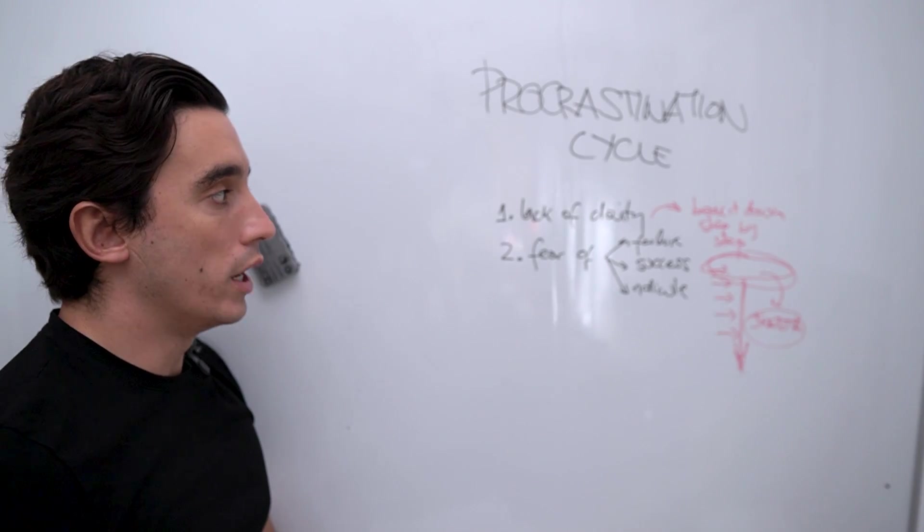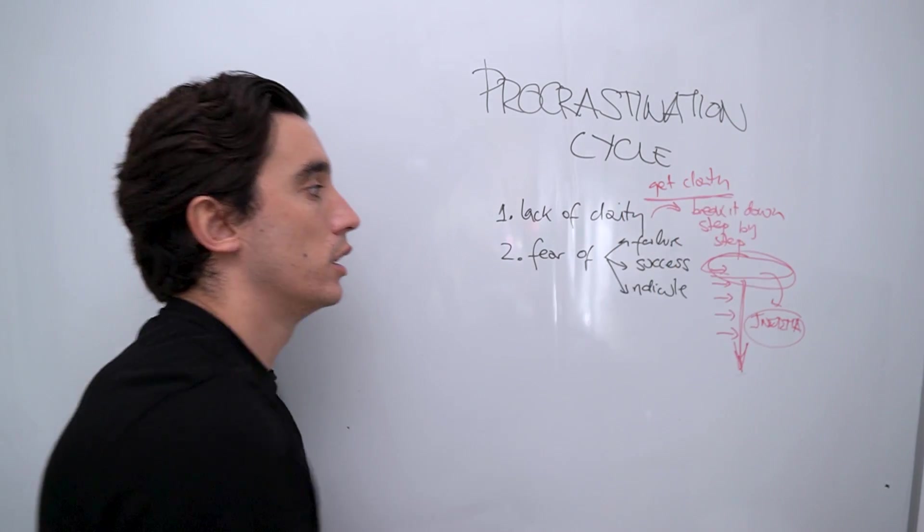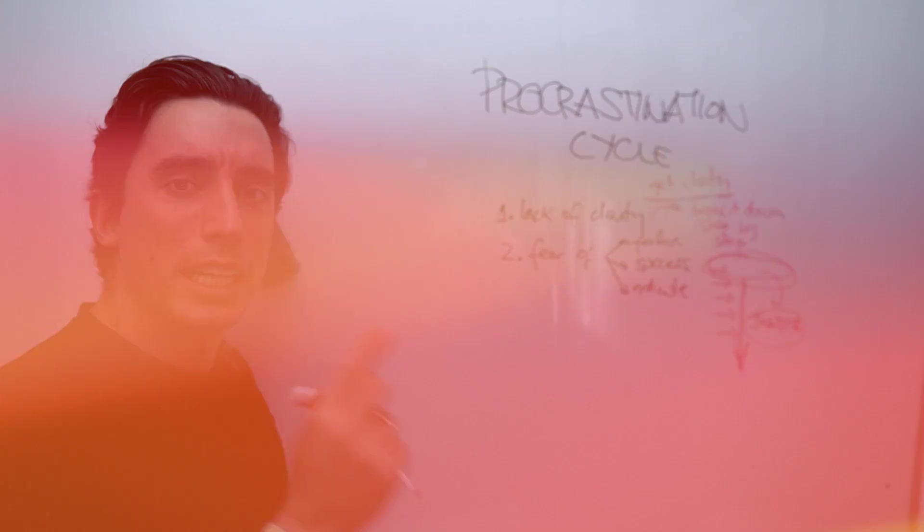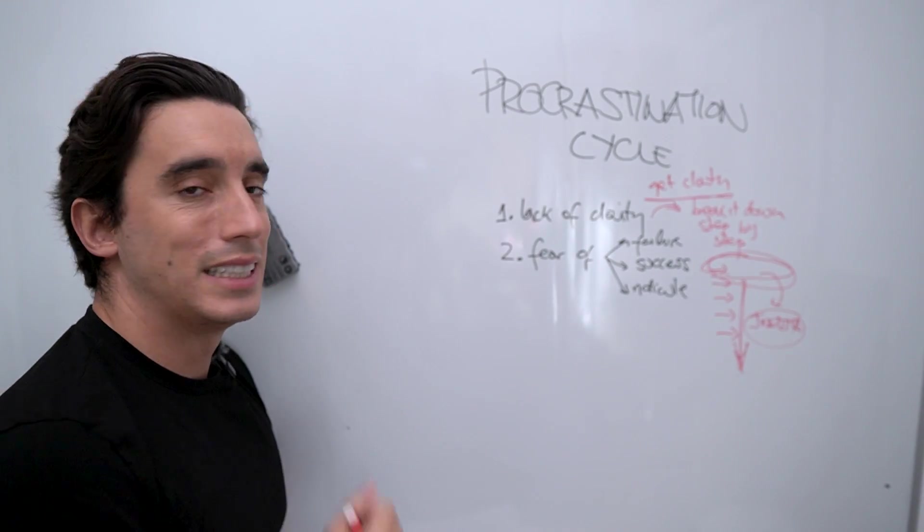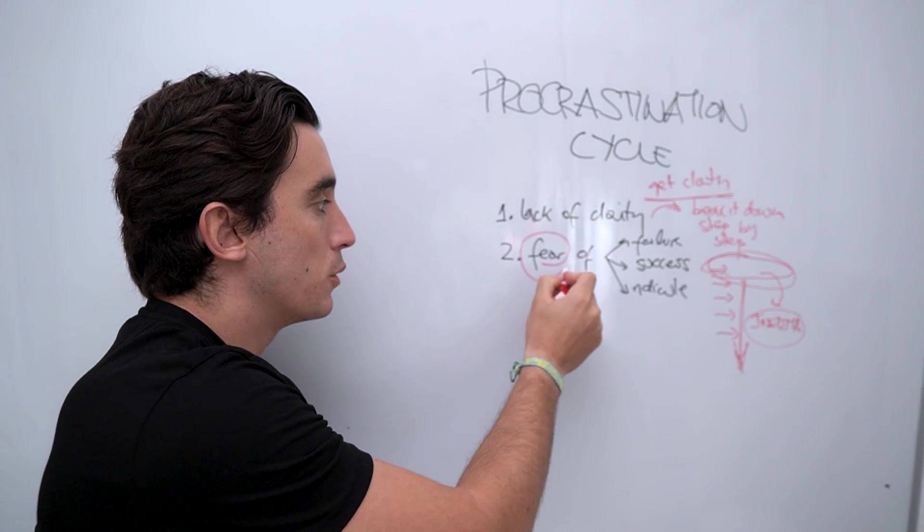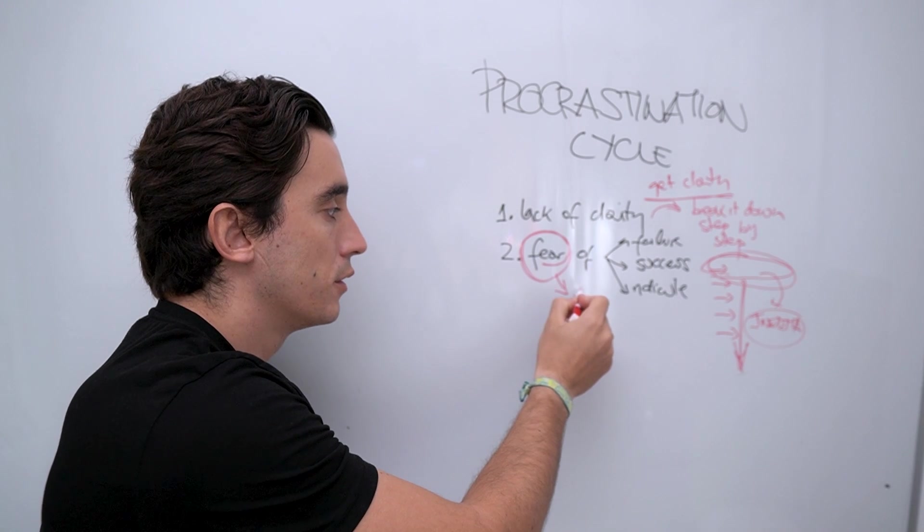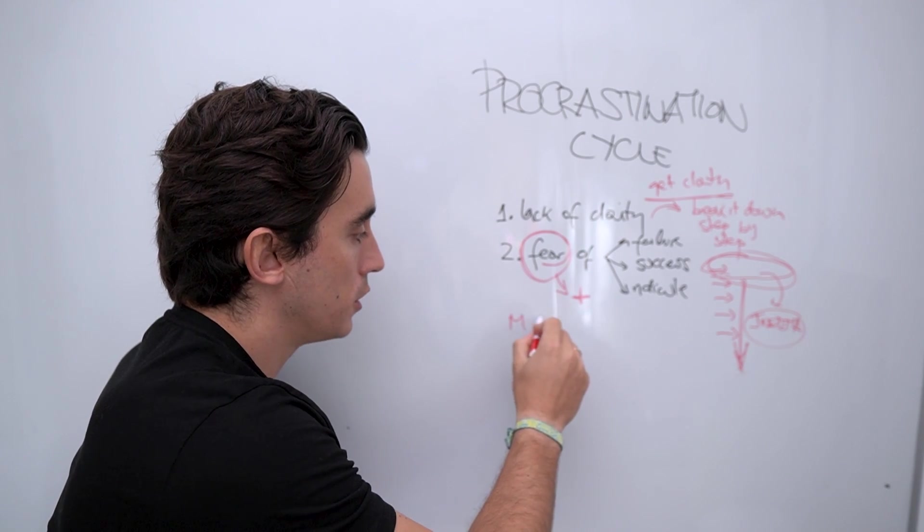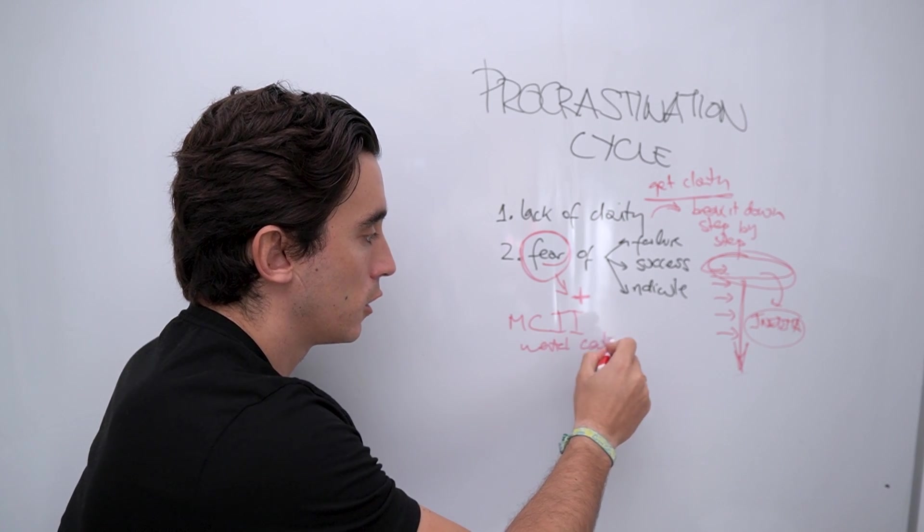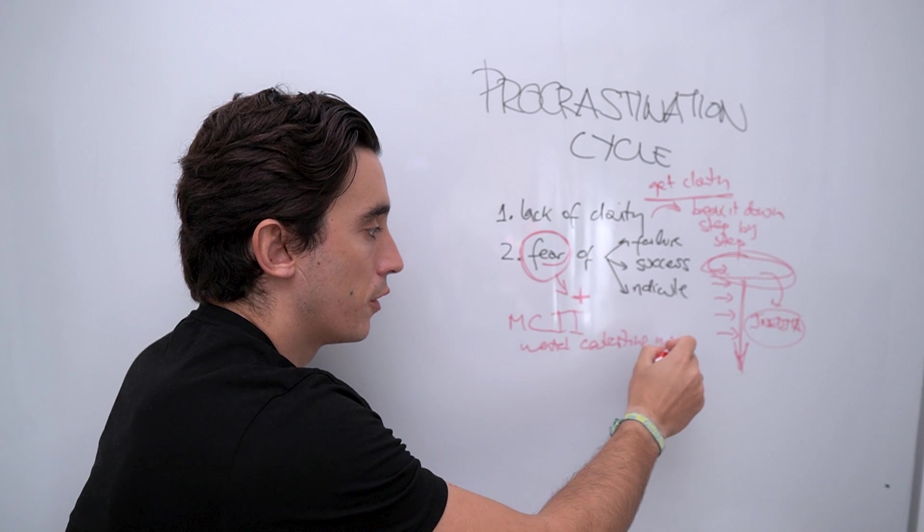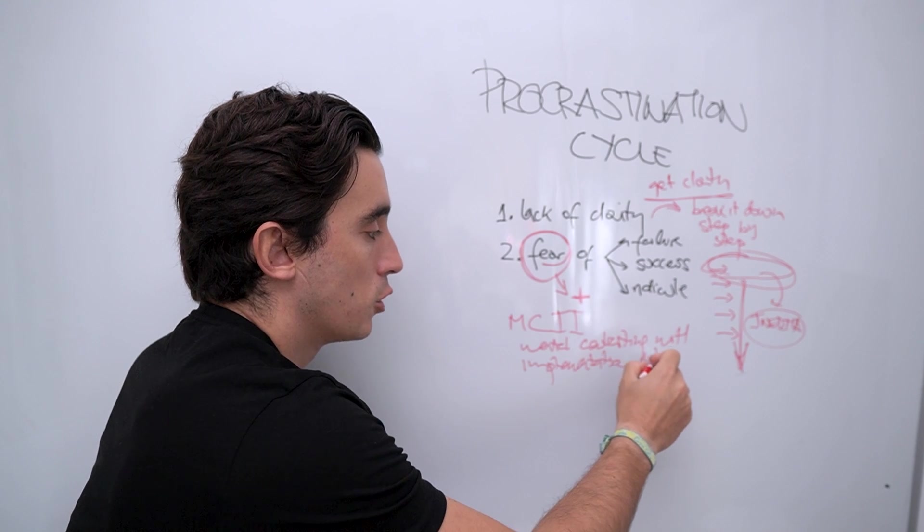That is the strategy number one: get clarity. Make it as simple as possible to actually do the task. The second strategy is to remove the negative association for the task. In other words, it is to reframe the fear that you're feeling as something positive.